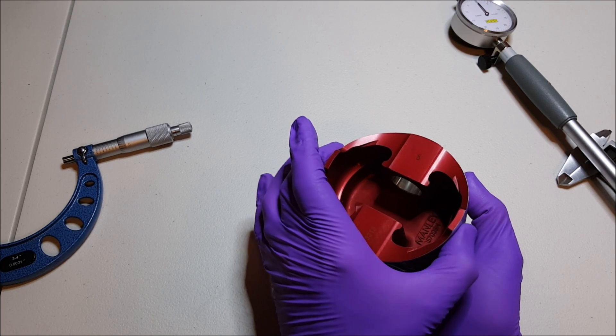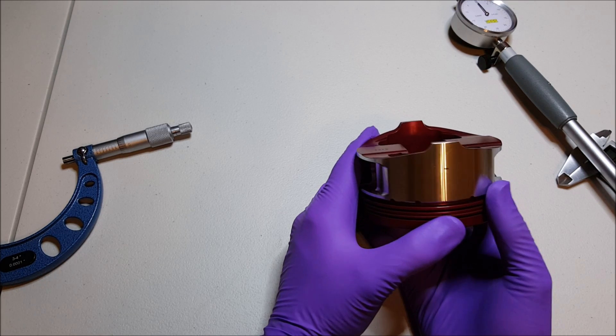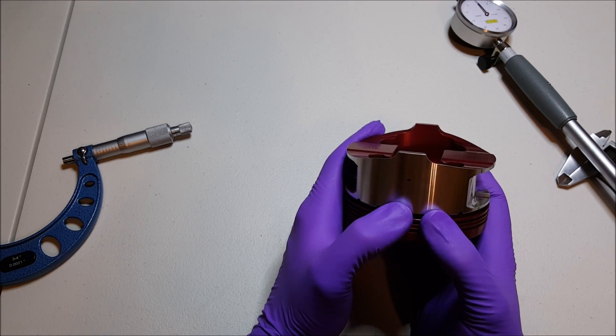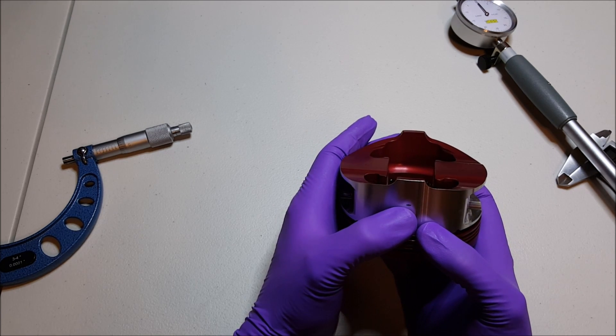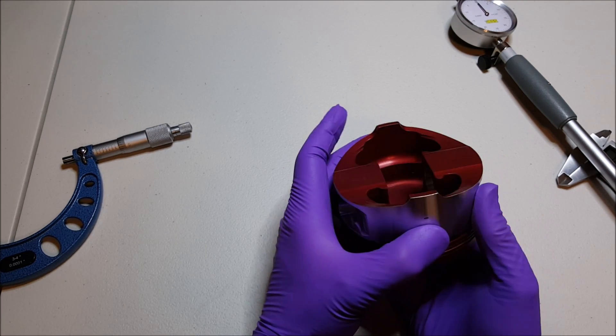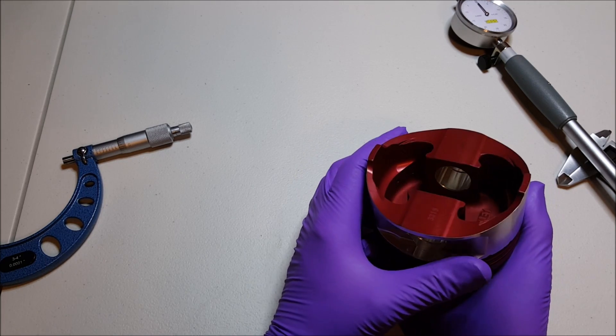You want to measure the outer diameters at that specific location that is mentioned in your documentation when you order the pistons. You'll take the outer diameter and record these measurements in your lab book or in your engine build book. That's pretty much it on the piston side.